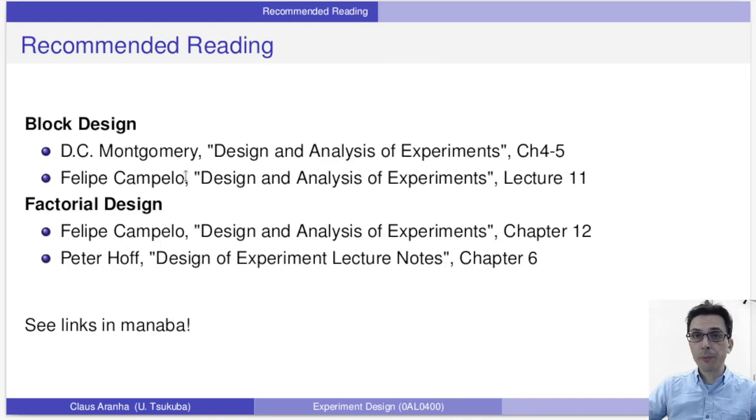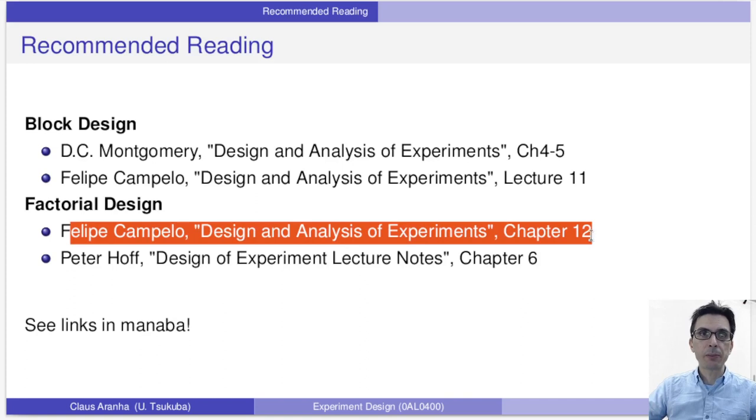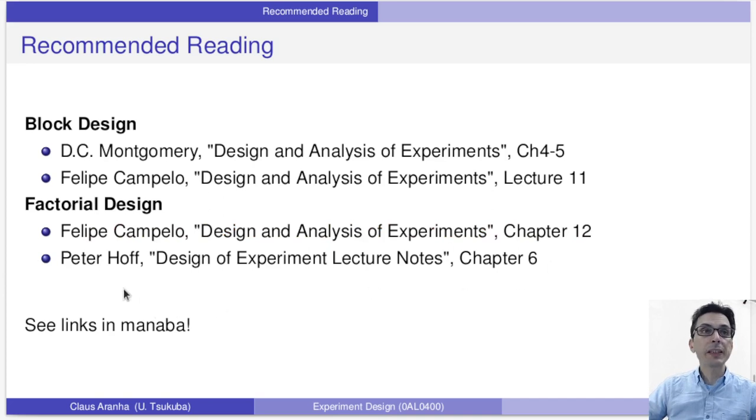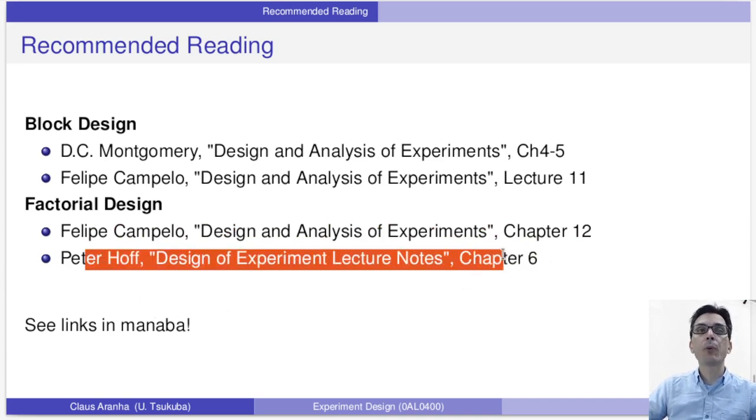For more information about factorial design, I recommend chapter 12 of Felipe Campelo, which has a derivation of these models. And chapter 6 of Peter Hoff, which has a more detailed analysis and three more examples of factorial design. So make sure to read these two materials to deepen your knowledge on this topic. Thank you very much for watching this, and I see you next week for a review of the course. See you there.